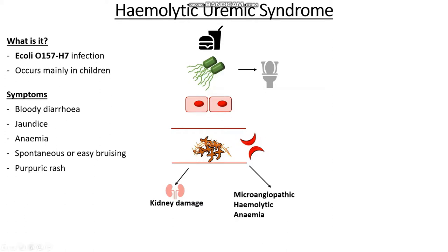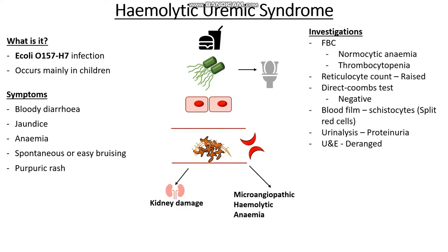Because the pathology is somewhat similar in its endpoint to TTP, the investigations are very similar. We start off with a full blood count which shows a normocytic anemia and thrombocytopenia. Our reticulocytes are raised because this is a hemolytic anemia, and our direct Coombs test is negative because it's not autoimmune. Blood film will show helmet-shaped schistocytes. Urinalysis will show renal dysfunction. But what will really help us determine whether this is HUS is to do a stool culture for the E. coli O157:H7 bug, or PCR to find the E. coli toxin.